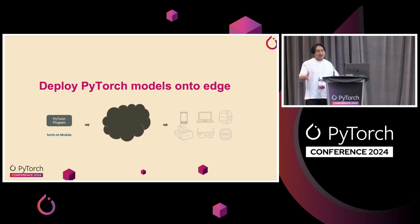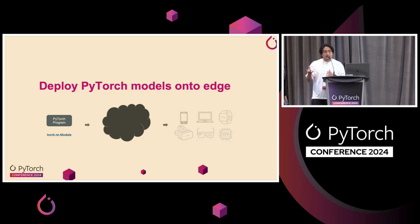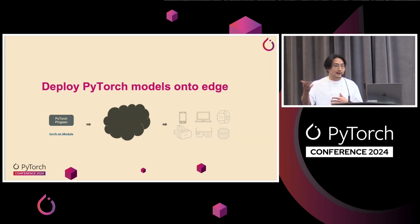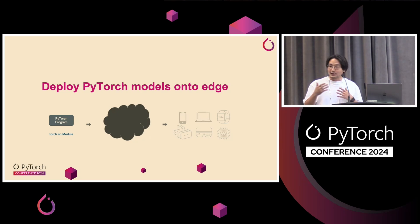On a high level, the problem statement is that we want to deploy PyTorch models — Torch.nn modules — onto phones and edge devices, and in this talk we will cover how we can do that. Coincidentally, or not coincidentally, we're using Torch.export and Torch.AO from the previous two talks.